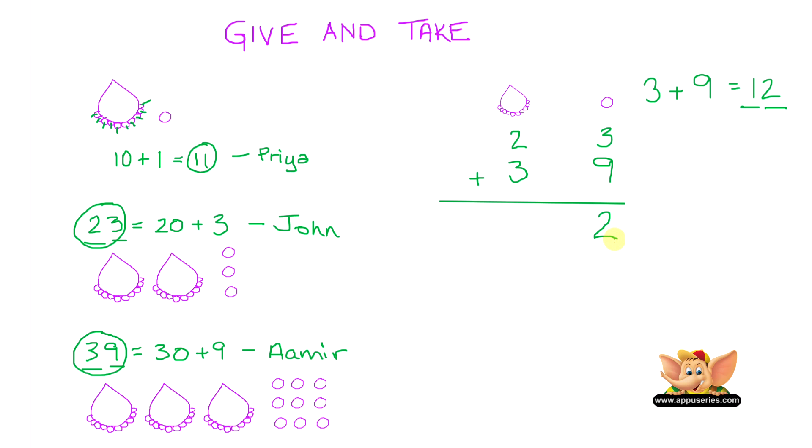And we carry over this 1 necklace to the necklace group or the tens place. So we'll put that 1 over here. So that's 1 plus 2 equals 3. And we know 3 plus 3 equals 6. So that's 6 necklaces in total. So John and Amir have 6 necklaces and 2 pearls or you could say 62 pearls in total.